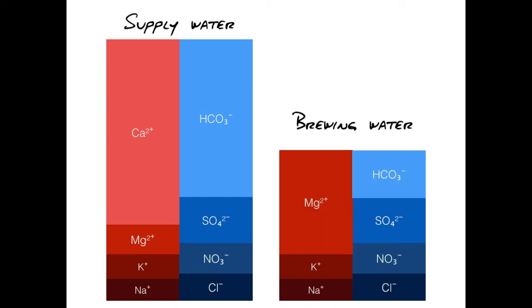We want some GH that comes from magnesium to increase the pulling power of the water. We also want some KH from bicarbonate to soften the flavours in our brew.